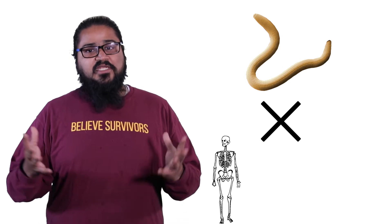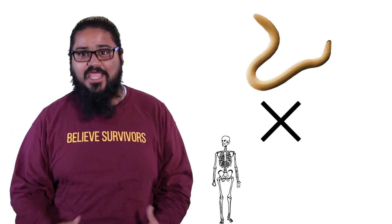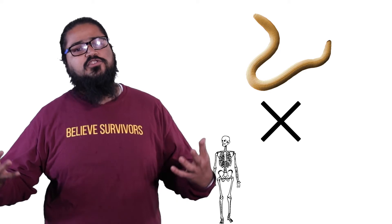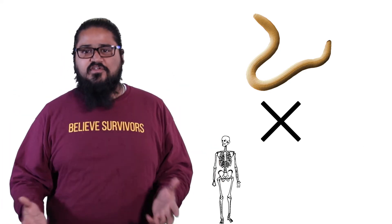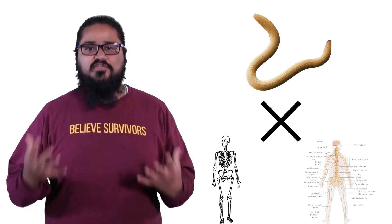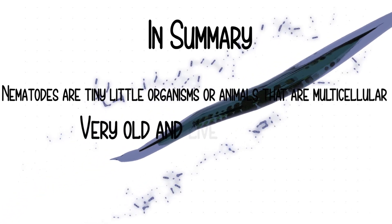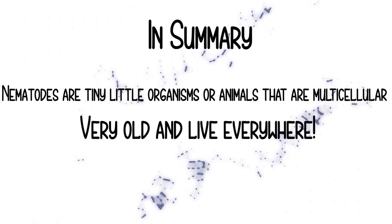Nematodes also have those systems, except they don't have a skeleton. Some insects, which are also animals, have an exoskeleton — a hard skeleton on the outside — but nematodes don't have that. Nematodes also do not have a full nervous system; they have some neurons but not a fully developed nervous system. They have some muscle fibers, but they use their skin and water pressure to move around. In summary, nematodes are tiny multicellular animals that are very old, live everywhere around us, and exist in enormous numbers.